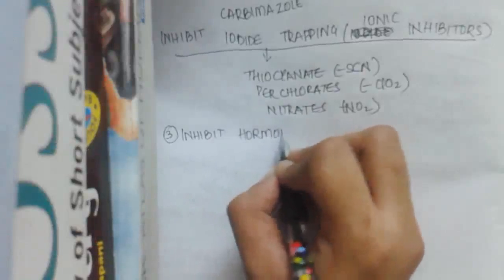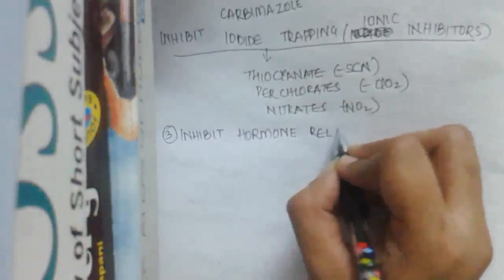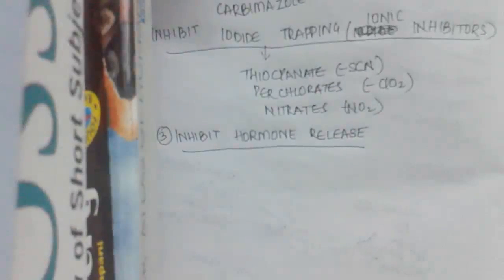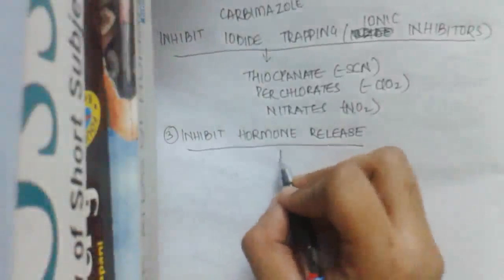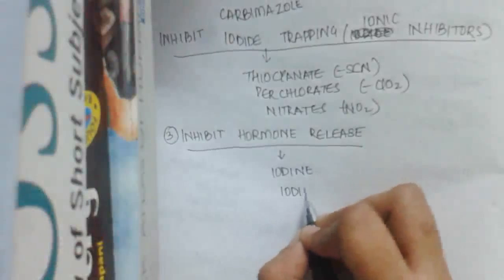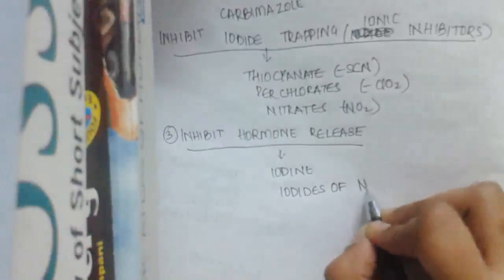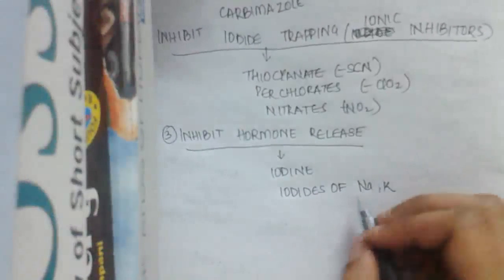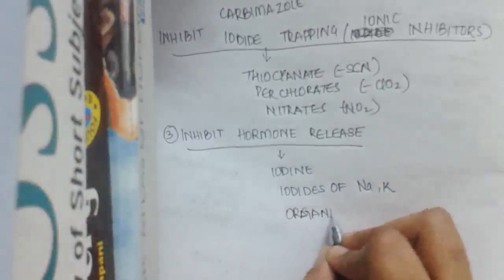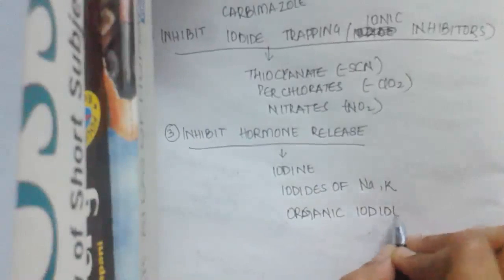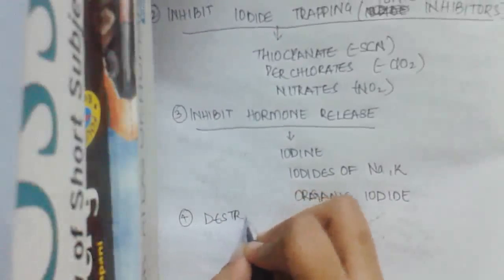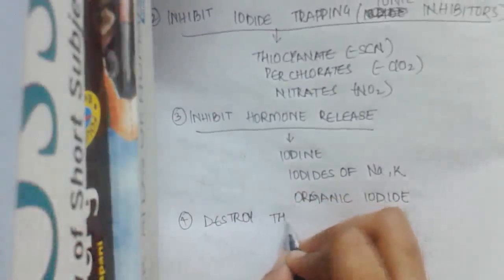The third class of drugs are those which inhibit hormone release. These include iodine, iodide of sodium or potassium, and organic iodide compounds.